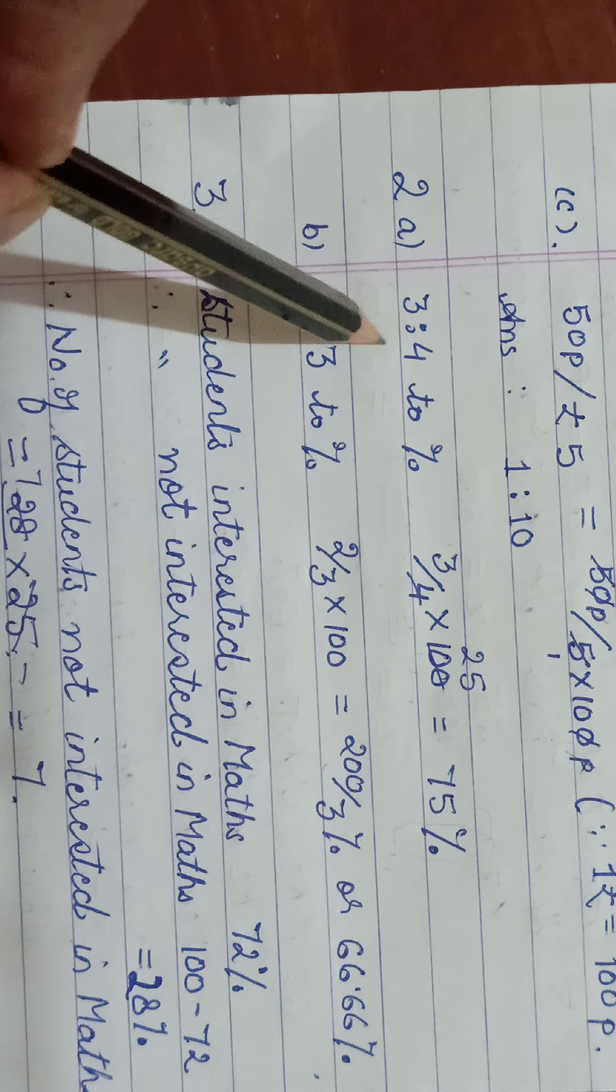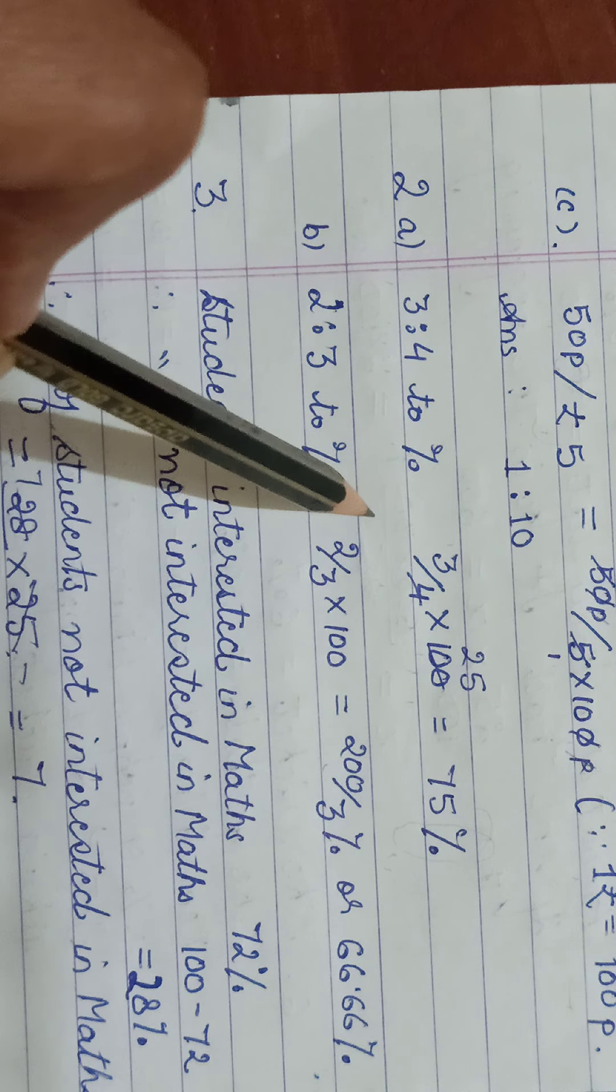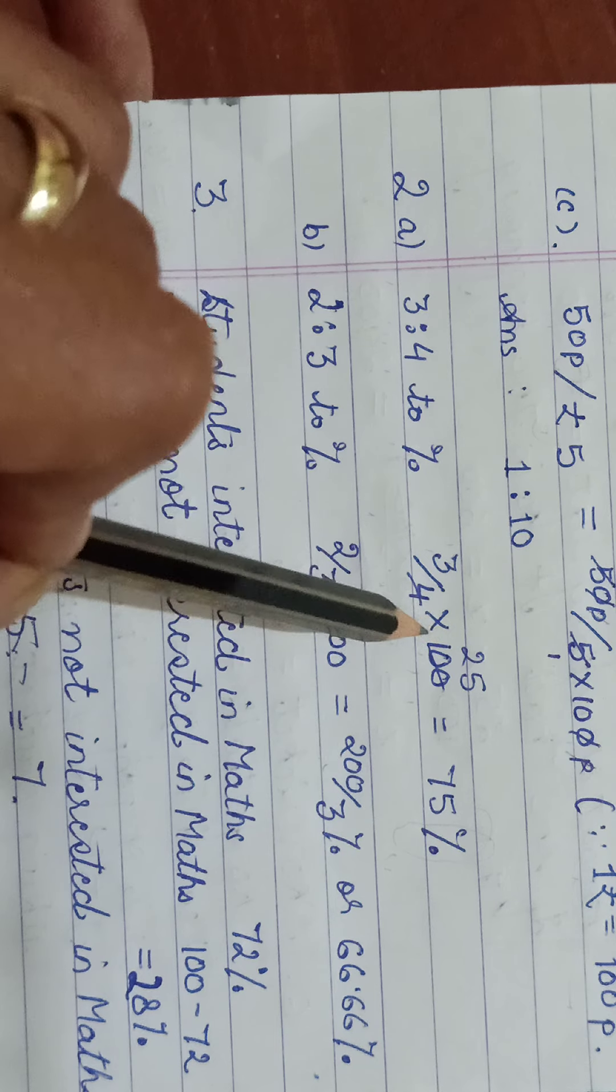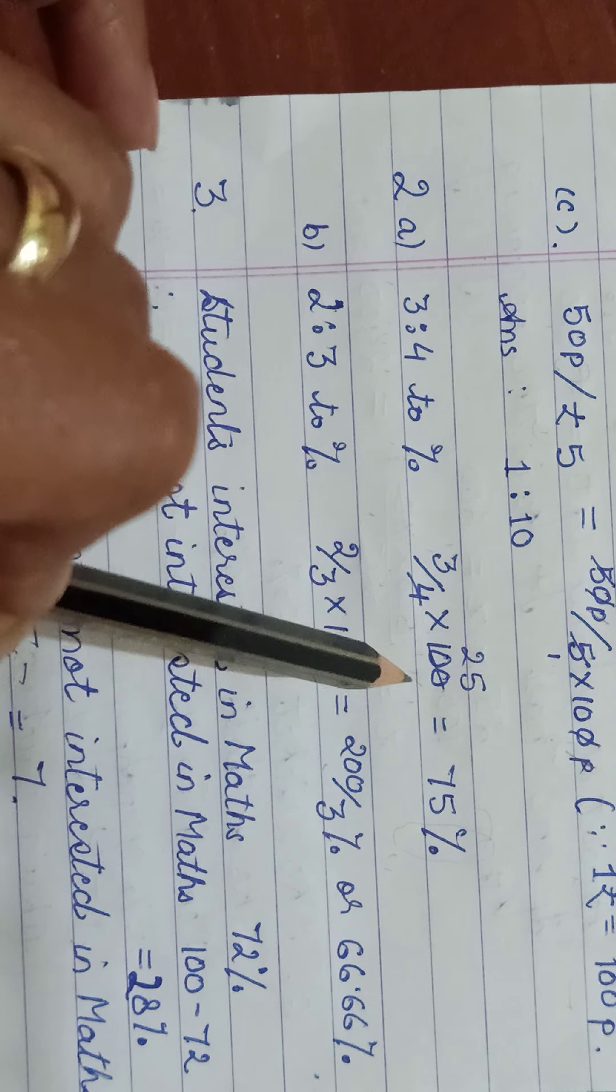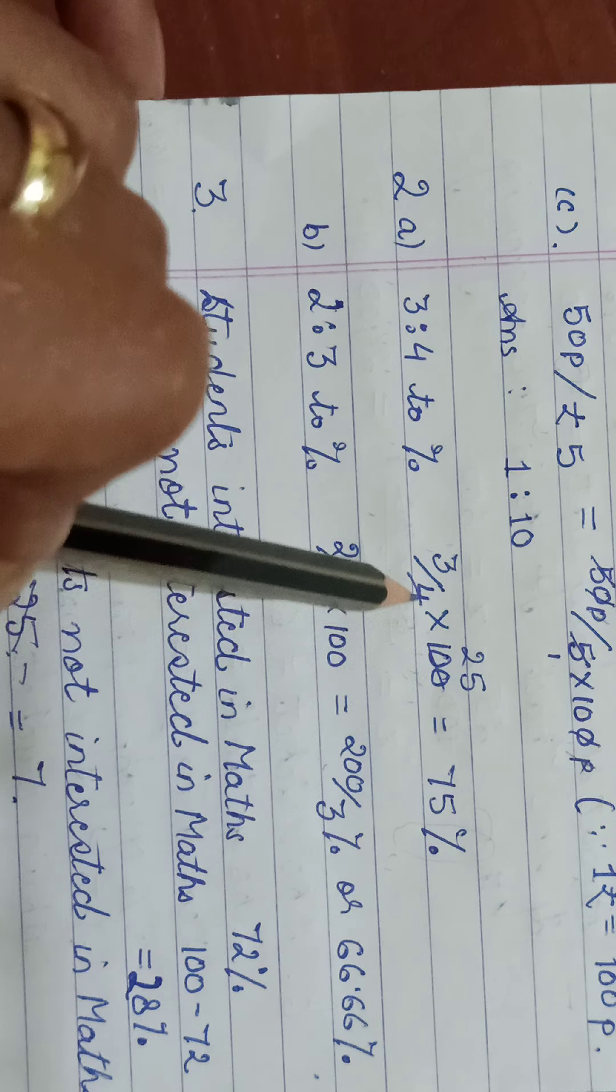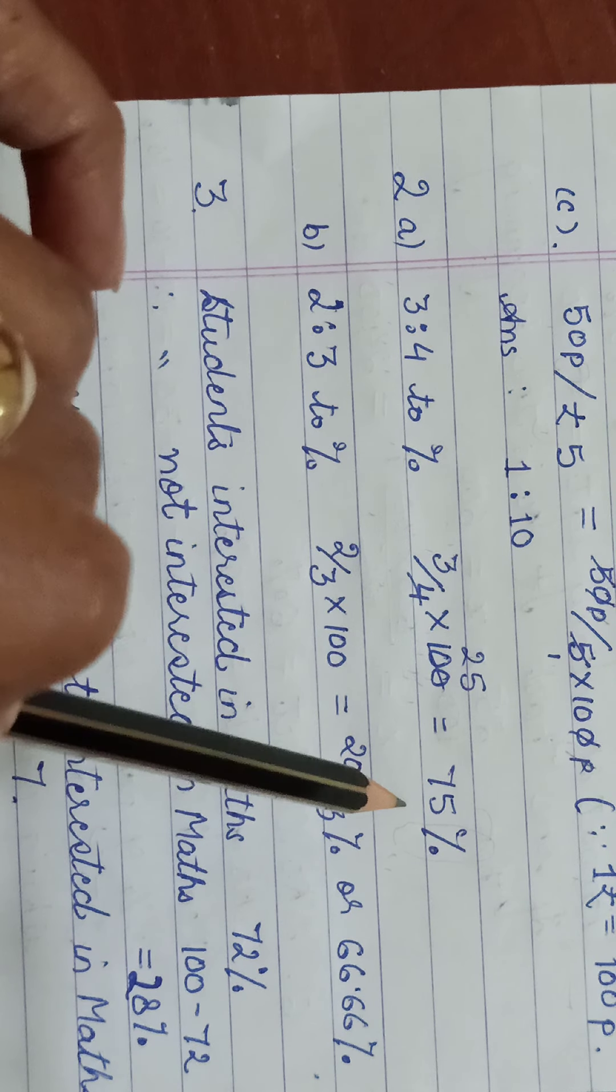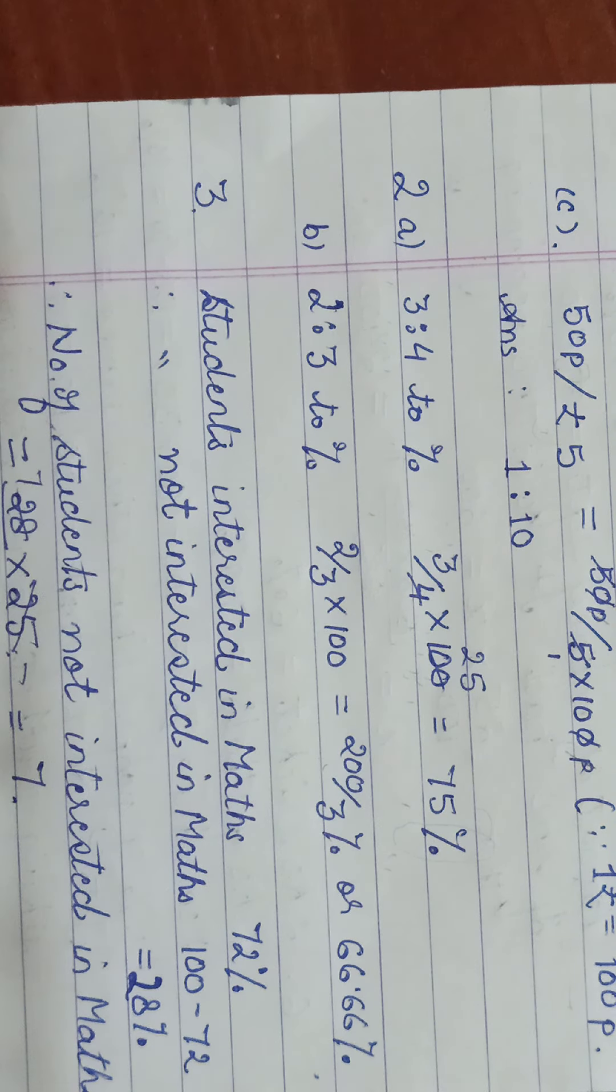The first ratio 3 by 4, 3 is to 4 has to be converted to percent. 3 is to 4 means 3 upon 4 and to convert it to percent multiply by 100. Cancel out now whatever you can. 4 into 25 is 100. So 25 times 3. This is 75 percent.